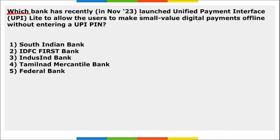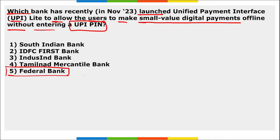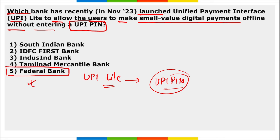Next: which bank has recently launched UPI Lite to allow users to make small-value digital payments offline without entering a UPI PIN? It is Federal Bank. Federal Bank launched UPI Lite, which is an on-device wallet feature integrated into existing UPI mobile applications. This UPI functionality was introduced by RBI in September 2022.